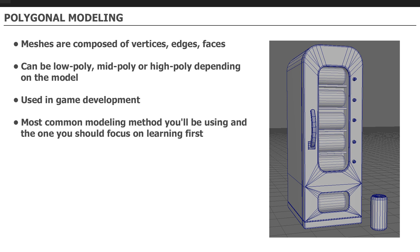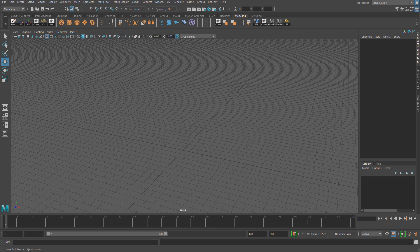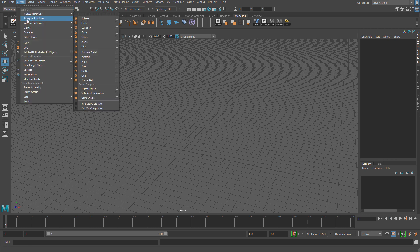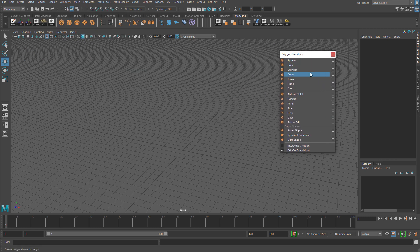This is the most common modeling method you'll be using and the one you should focus on learning first. Your polygonal models will often start off as a cube, cylinder, sphere, a single plane, or even a single quad. You'll be creating your objects from these primitive shapes. In Maya, you'll find these basic primitive shapes under Create, then Polygon Primitives.